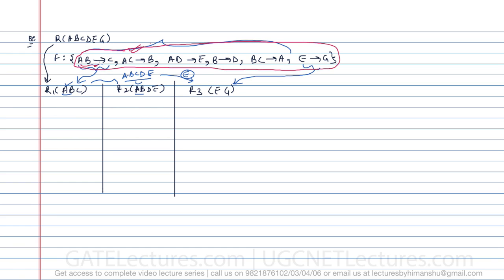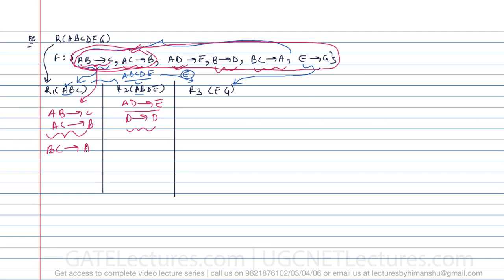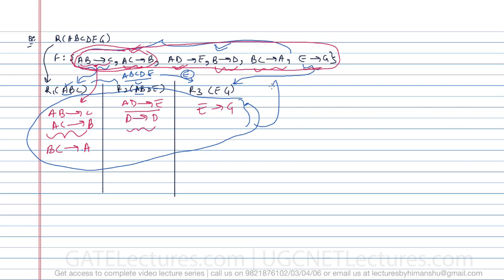AB determines C is valid only for R1, and AC determines B is also valid only for R1 — so we use these two there. AD determines E is only valid on R2, and B determines D is only valid on R2. BC determines A is only valid on R1. E determines G is only valid on R3. So instead of adding or subtracting any functional dependency, we just divided the original dependencies across the tables. Taking the union gives exactly the original set, so this decomposition is FD preserving.